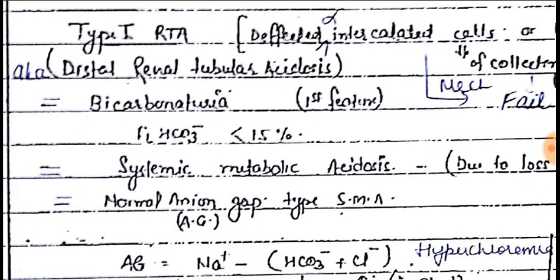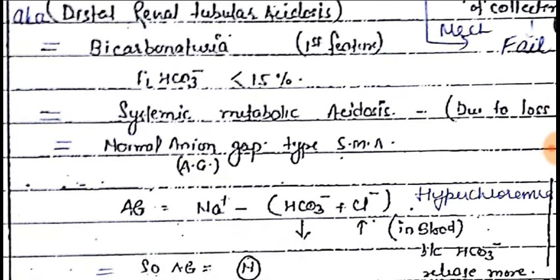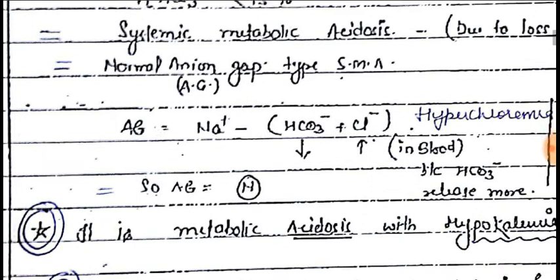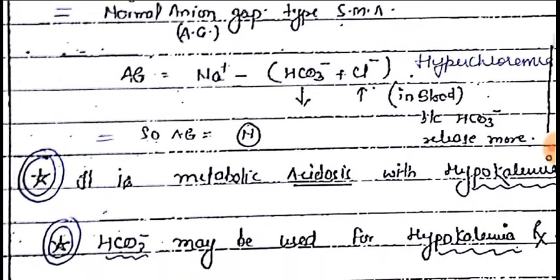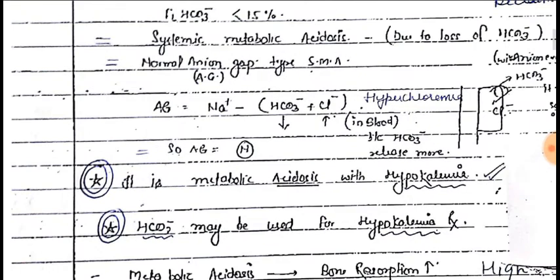The fractional excretion of bicarbonate is less than 15%. There is systemic metabolic acidosis, but the anion gap is normal, because the anion gap equals sodium minus the sum of bicarbonate plus chloride. In this condition, bicarbonate goes down but chloride levels go up, therefore the anion gap remains normal.